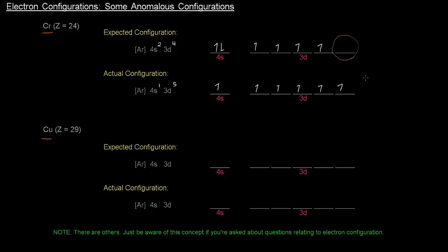The idea simply is that having them all half-filled is more stable in this case. This situation is more stable than the expected one. So this is an exception to the Aufbau principle's expected configuration.